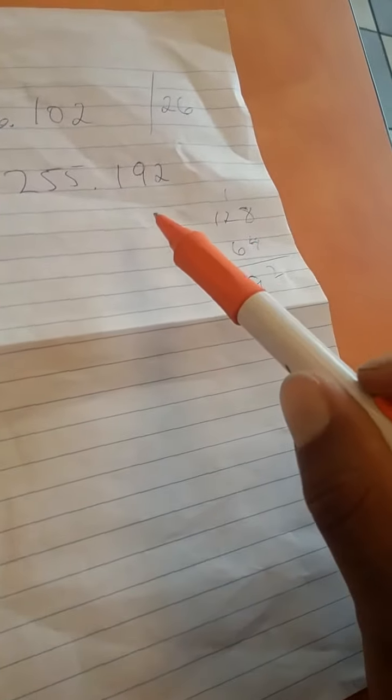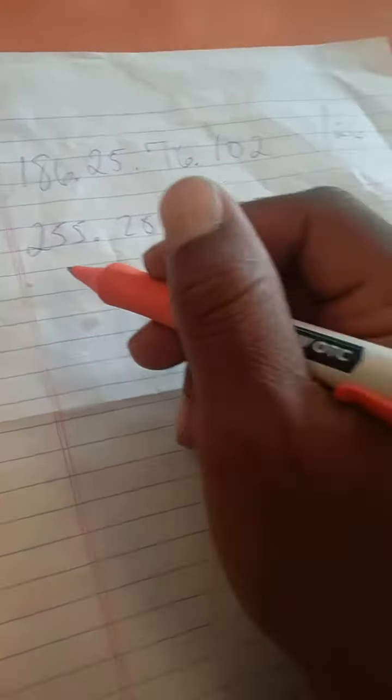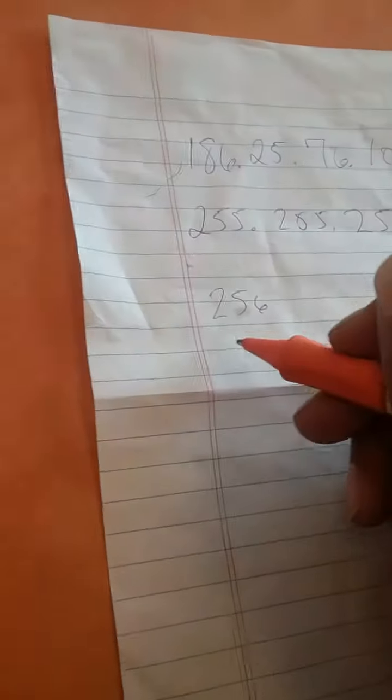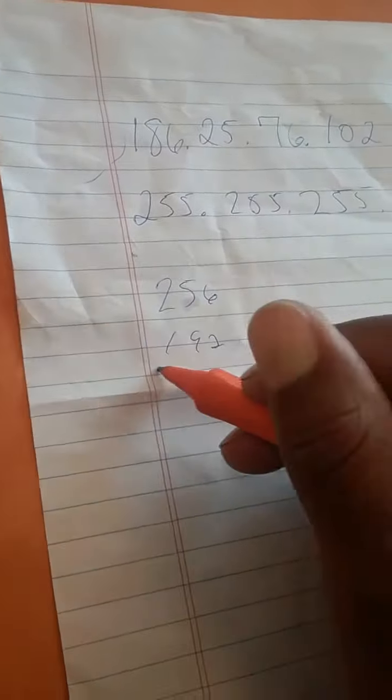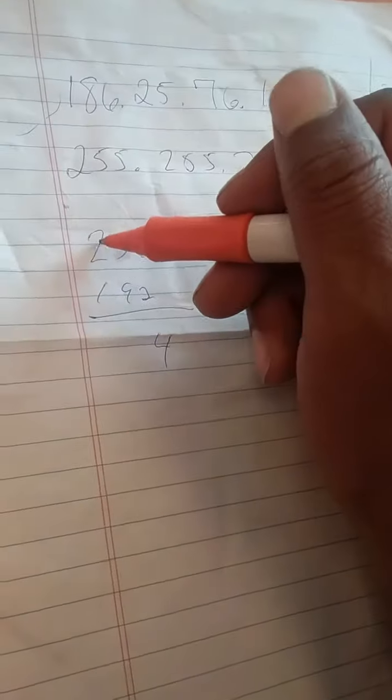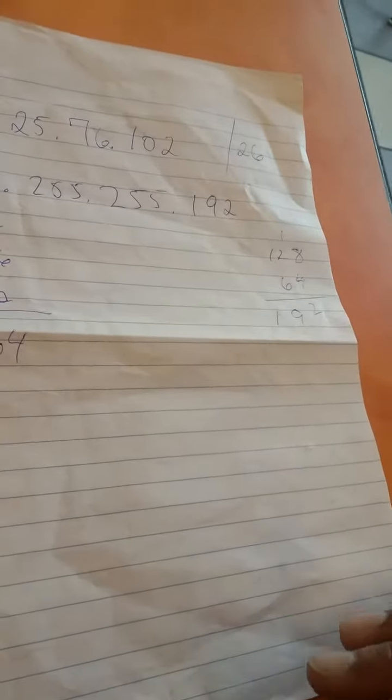The block would be a 64 block because you would take 192 and subtract it from 256 to get the block that you would use. 256 minus 192, and I believe it's 64. Okay, so you have a 64 block.